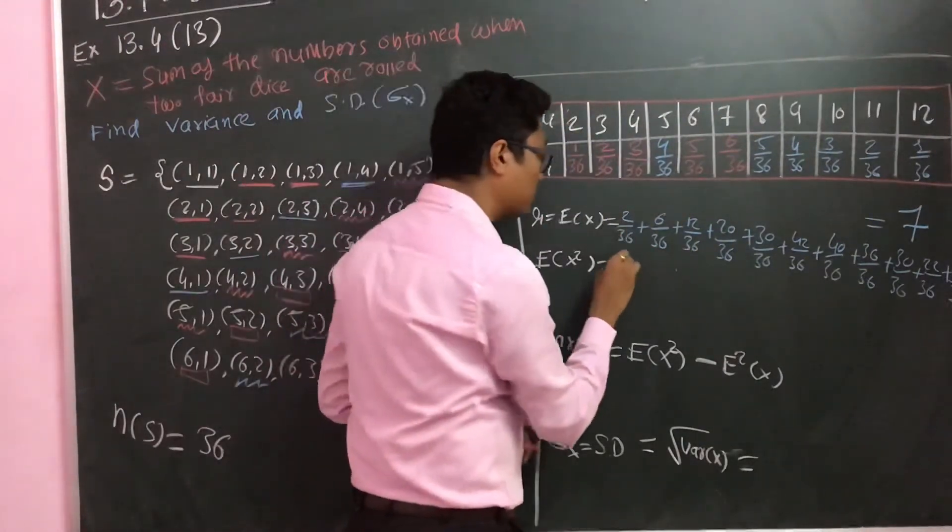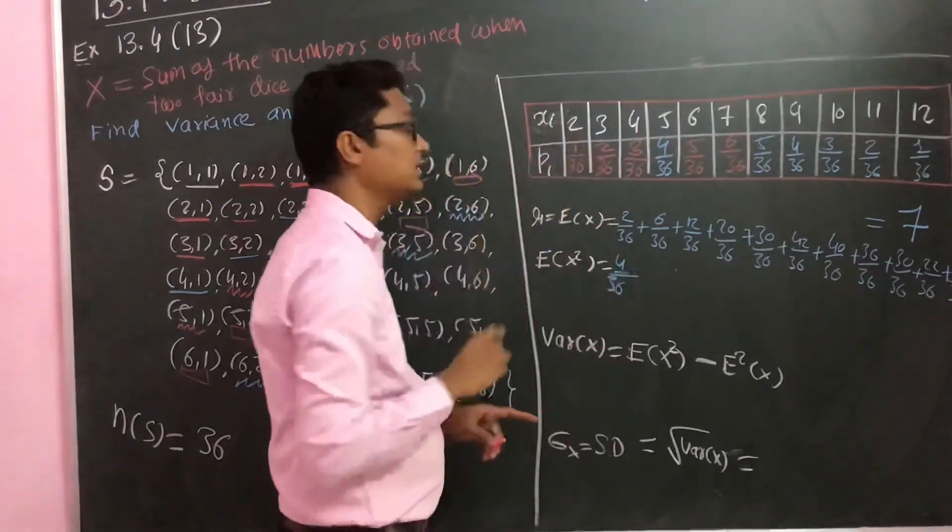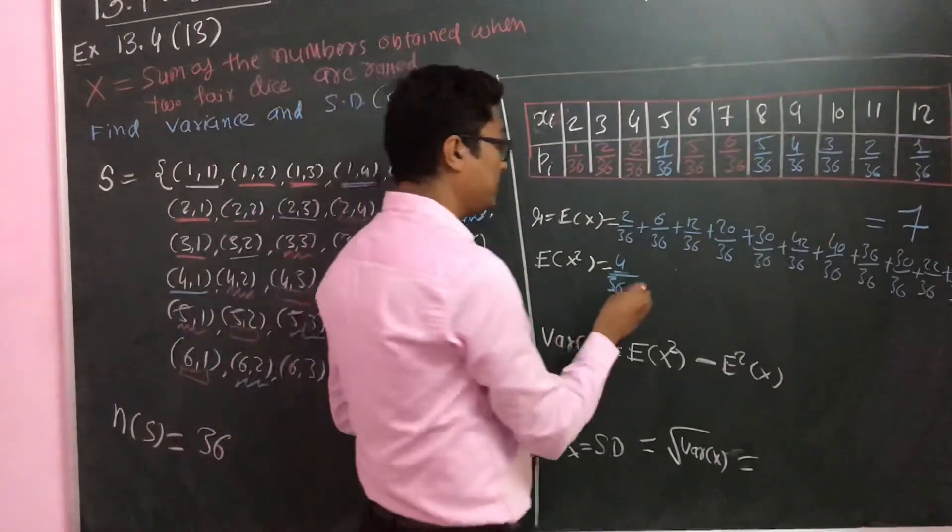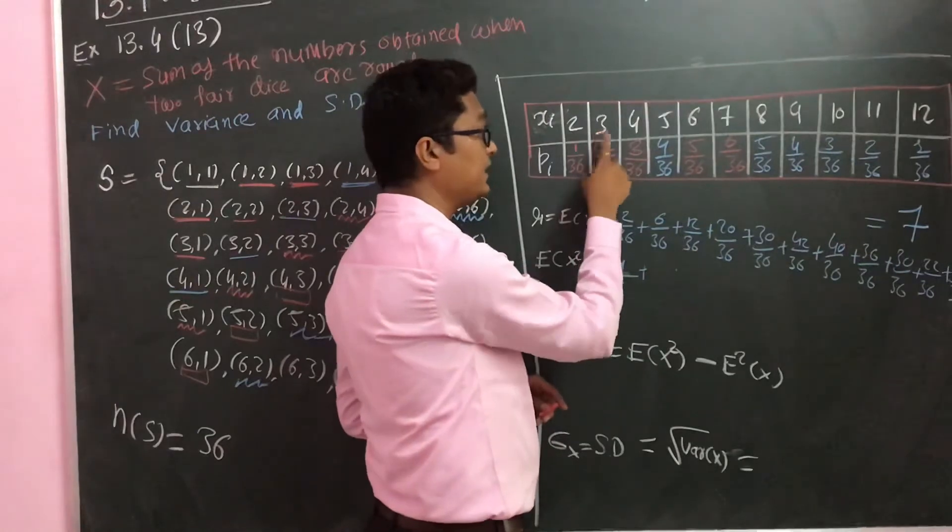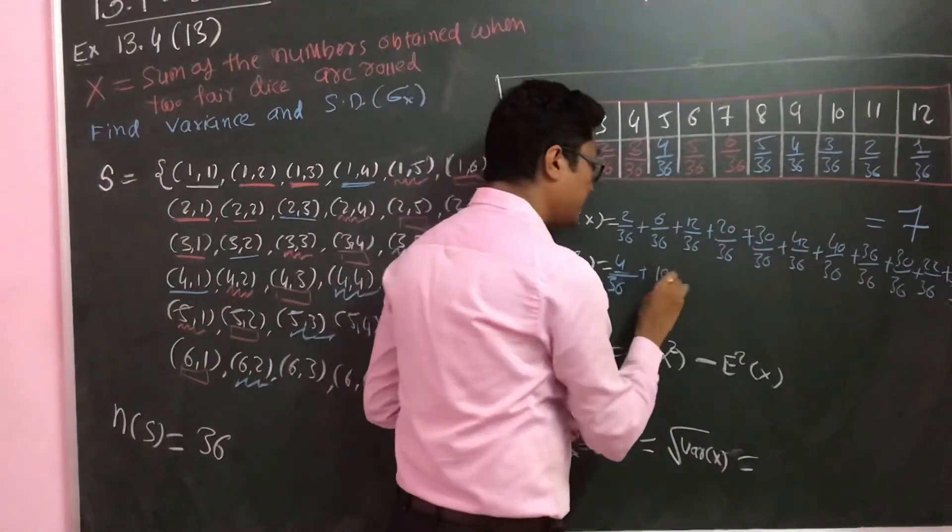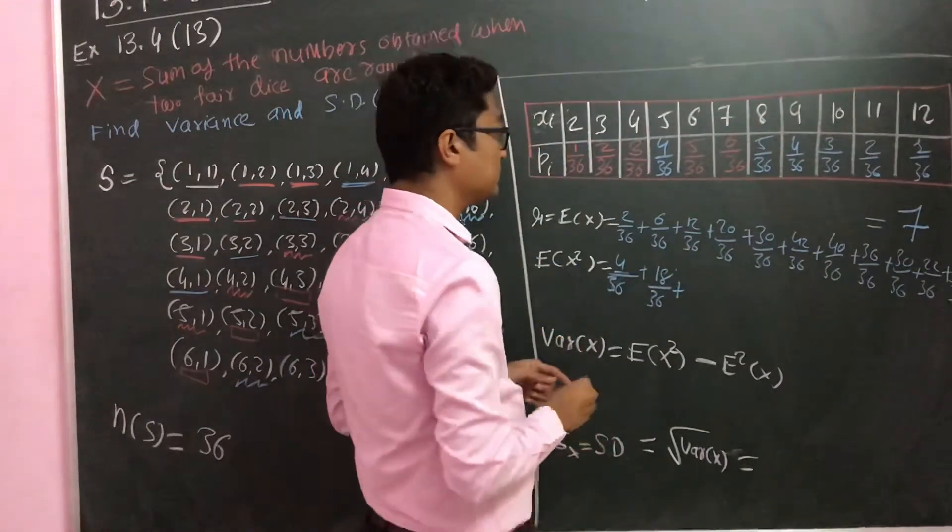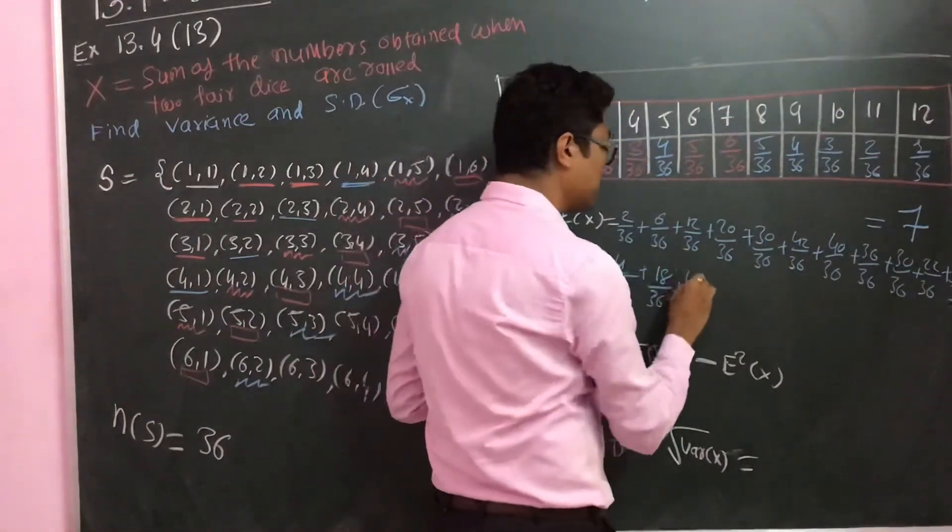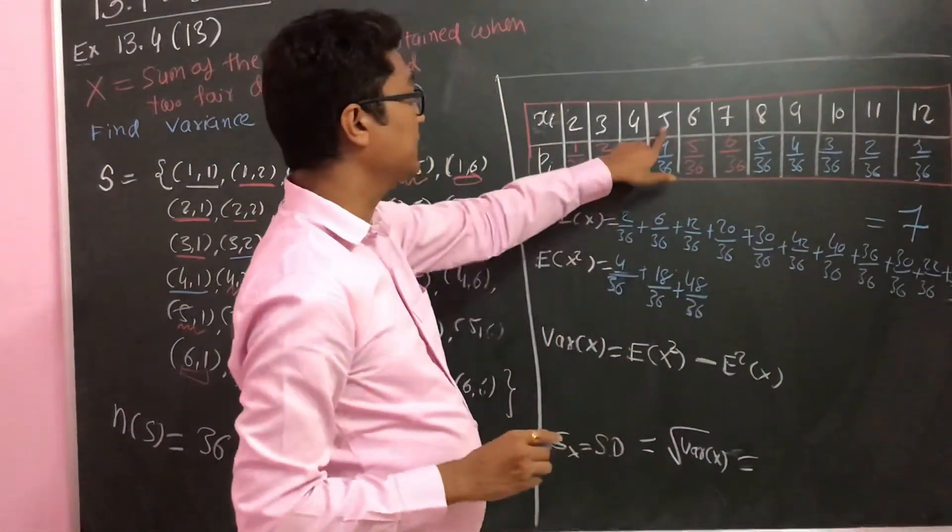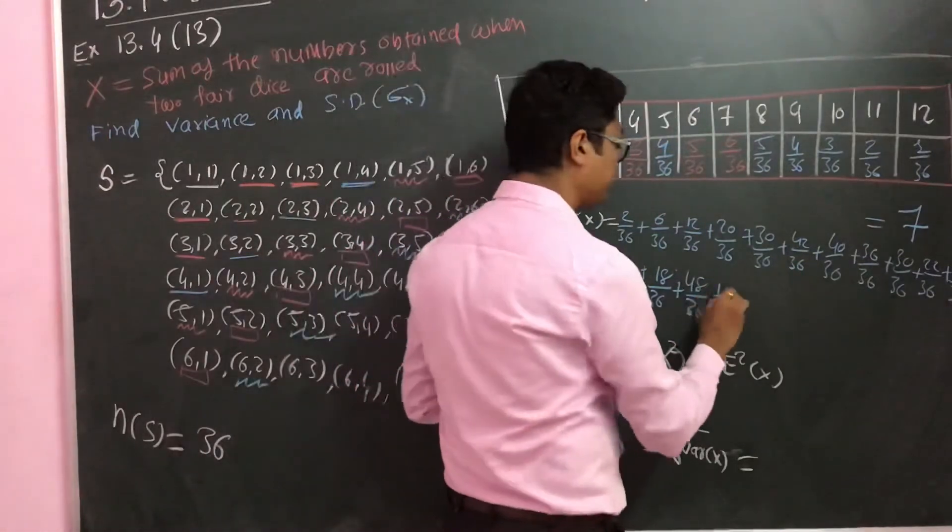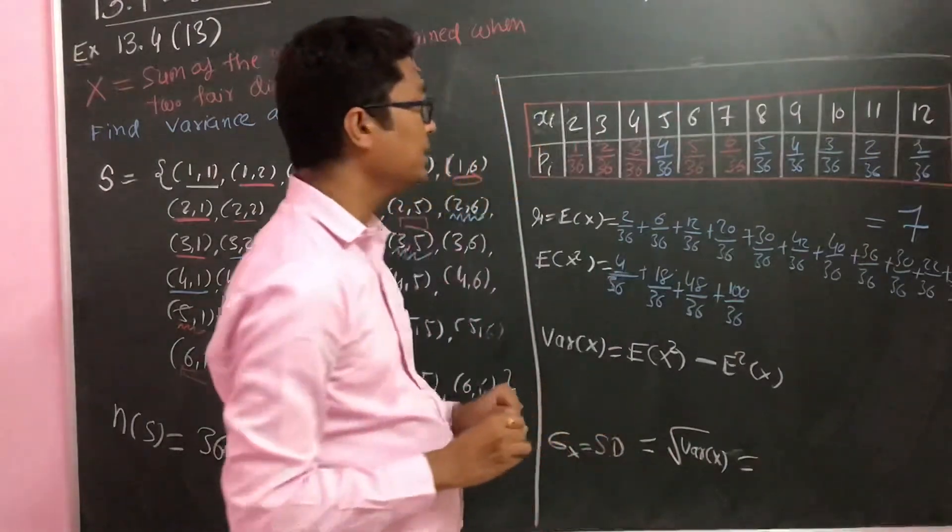Instead of writing 2 by 36, you square the 2, so it will be 4 by 36. 3 square is 9, 9 into 2 is 18 by 36. 4 square is 16, 16 into 3 is 48 by 36. Then next is 25 into 4, so that is 100 by 36.